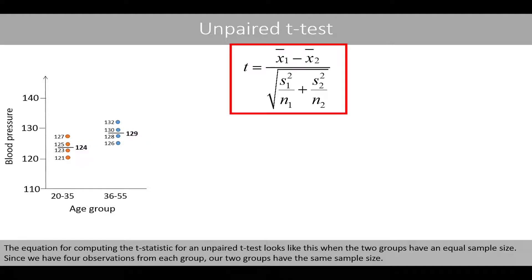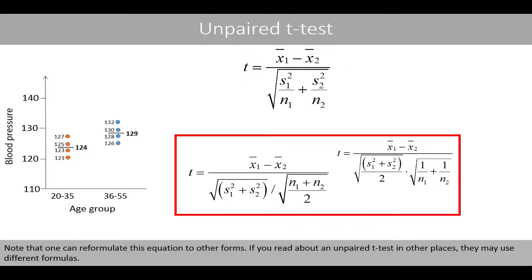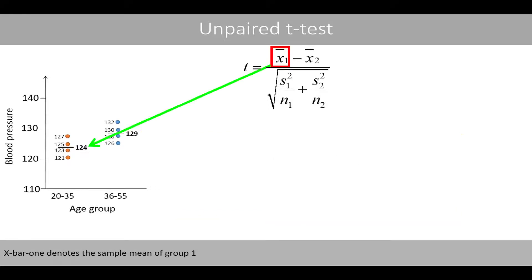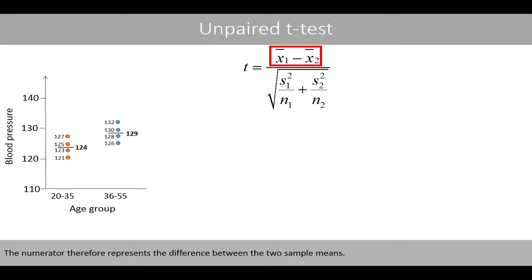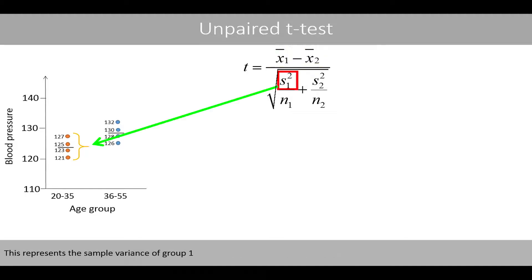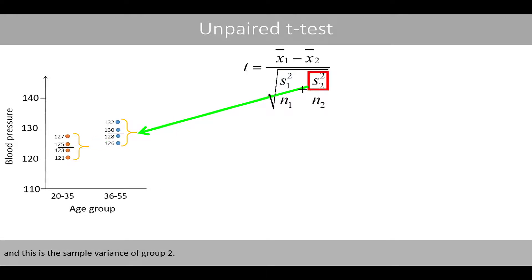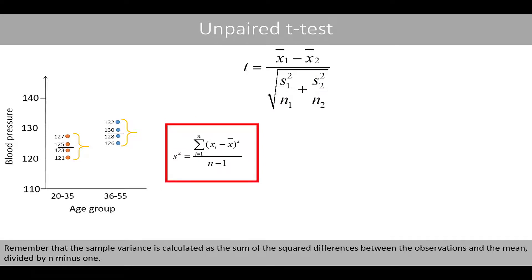The equation for computing the t-statistic for an unpaired t-test looks like this when the two groups have an equal sample size. Since we have four observations from each group, our two groups have the same sample size. Note that one can reformulate this equation to other forms. x-bar 1 denotes the sample mean of group 1, whereas x-bar 2 denotes the sample mean of group 2. The numerator therefore represents the difference between the two sample means. The sample variance is calculated as the sum of the squared differences between the observations and the mean, divided by n minus 1.